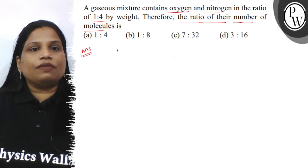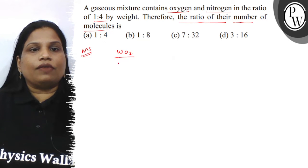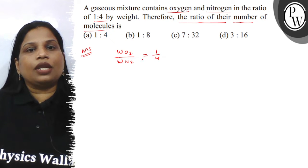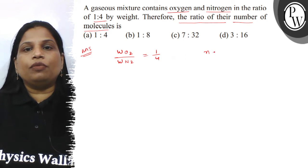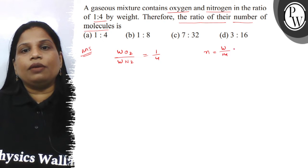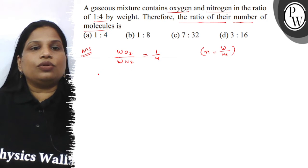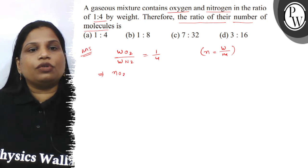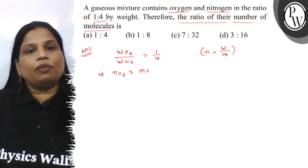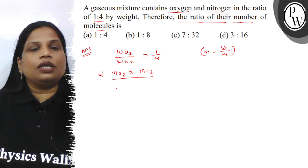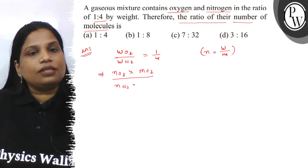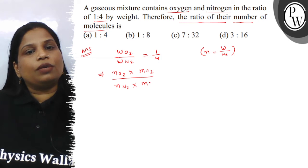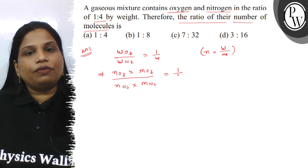So what is given? Given is weight of oxygen divided by weight of nitrogen is 1 by 4. And you know number of moles equals given weight by molecular mass. So we can write: number of moles of oxygen multiplied by molecular mass of oxygen, divided by number of moles of nitrogen multiplied by molecular mass of nitrogen, equals 1 by 4.